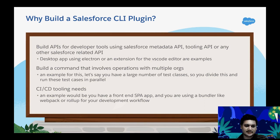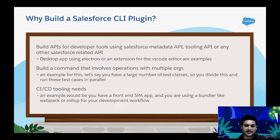Another example is if you want to build a command for operations across multiple orgs — for example, running a large number of test classes in parallel across different sandboxes. This can also be useful for CI/CD: if you're building a Lightning app using bundlers like webpack or rollup, you might want to simplify that by wrapping all your scripts in a Salesforce CLI plugin.